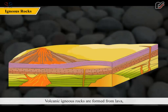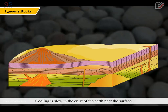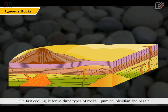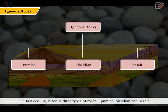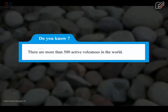Volcanic igneous rocks are formed from lava, which comes out of deep inside the earth through volcanoes. Cooling is slow in the crust of the earth near the surface. On fast cooling, it forms three types of rocks: pumice, obsidian and basalt. Whereas on slow cooling, it forms granite. There are more than 500 active volcanoes in the world.